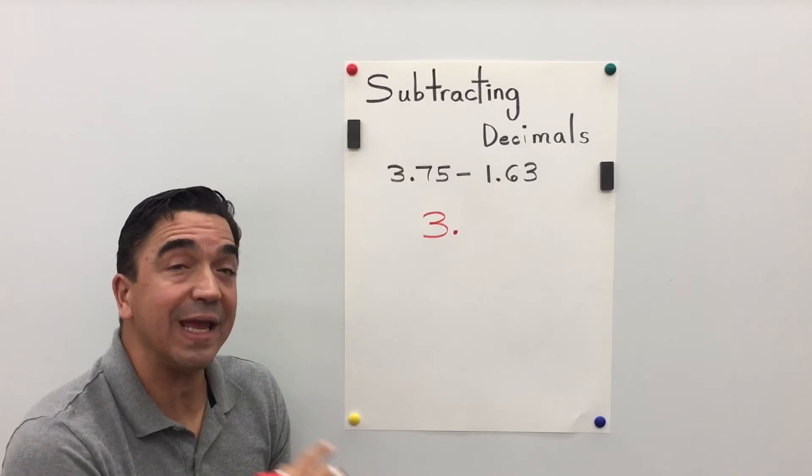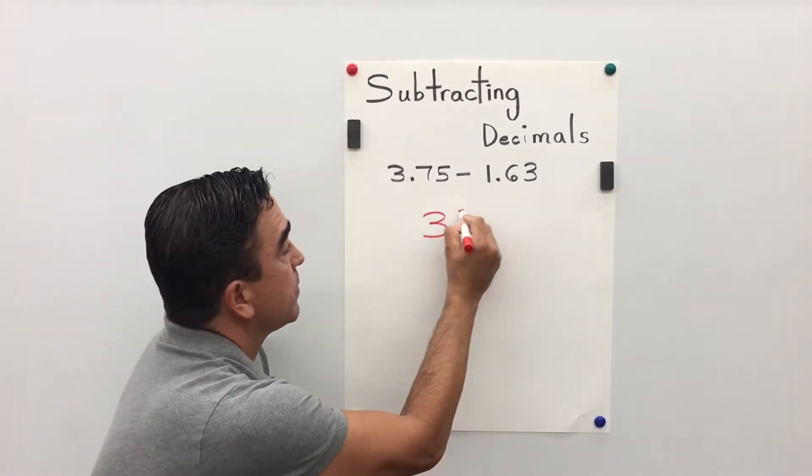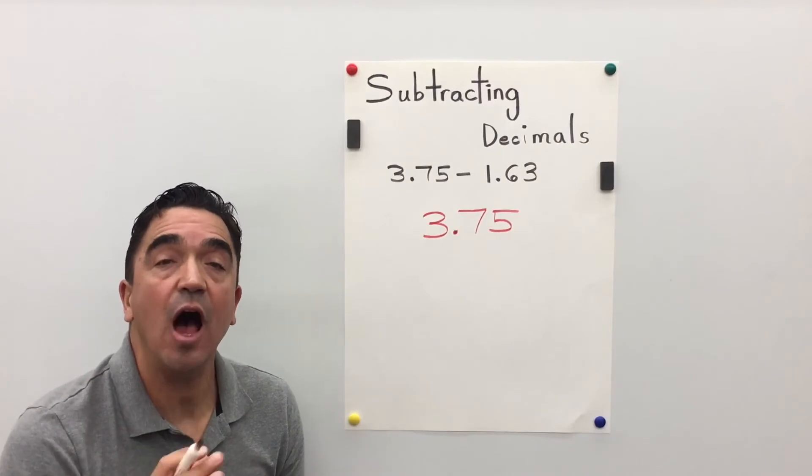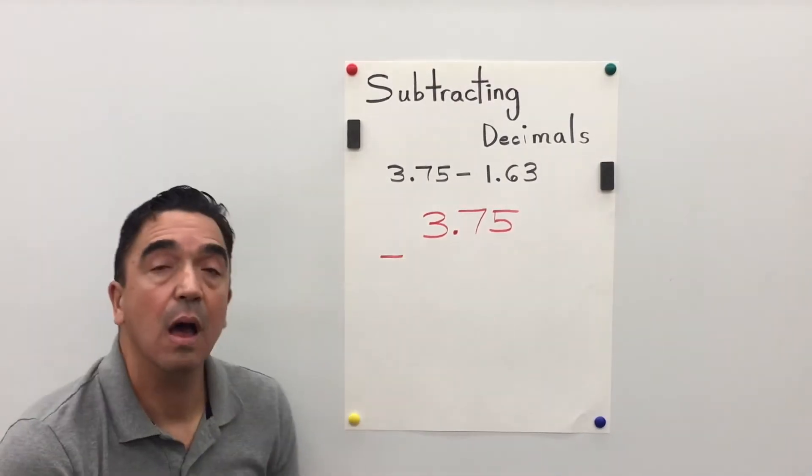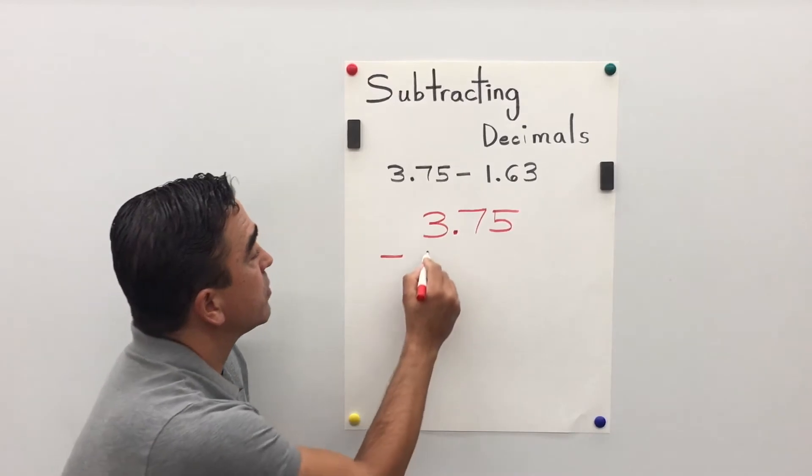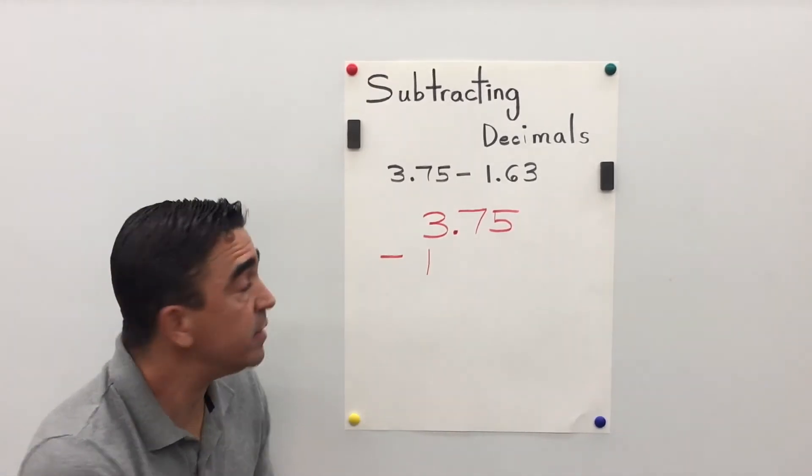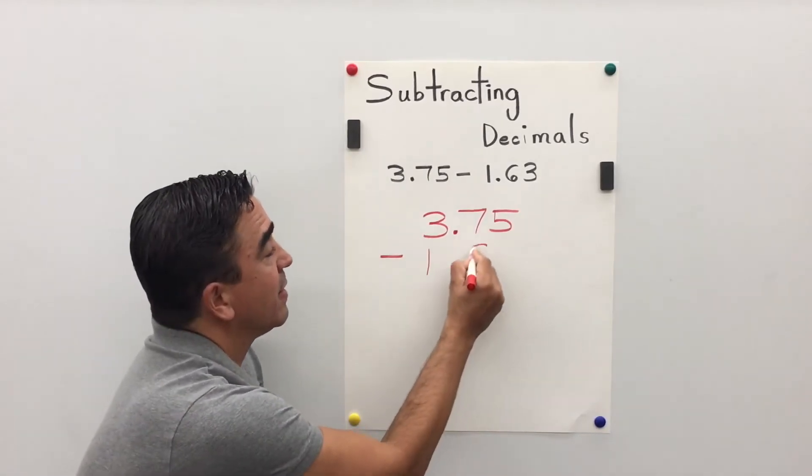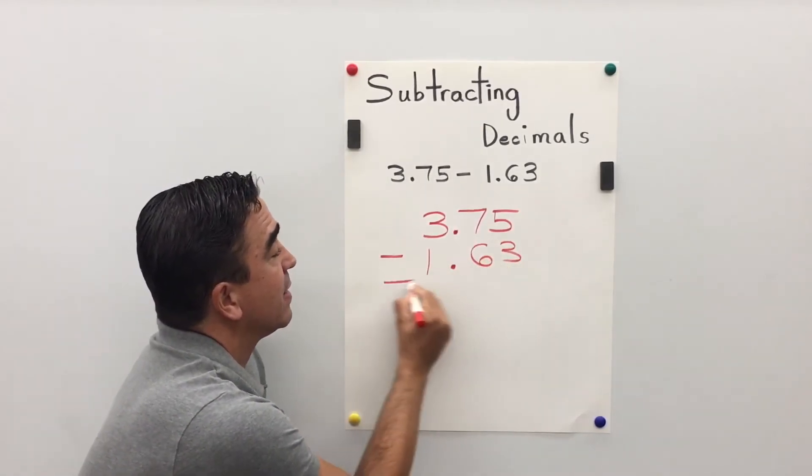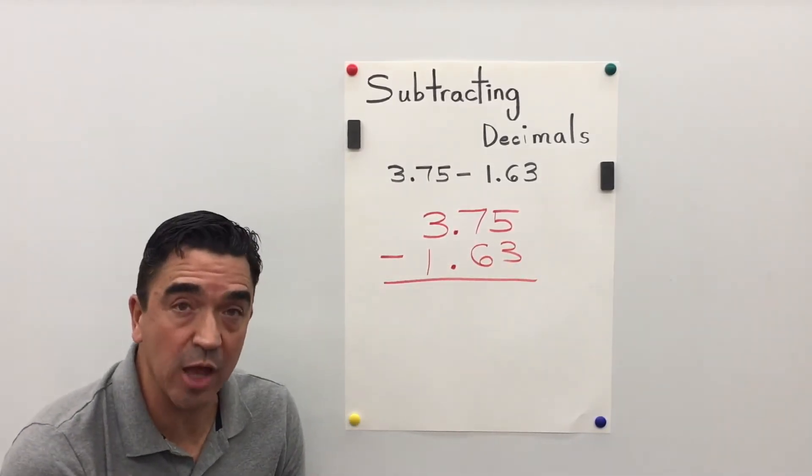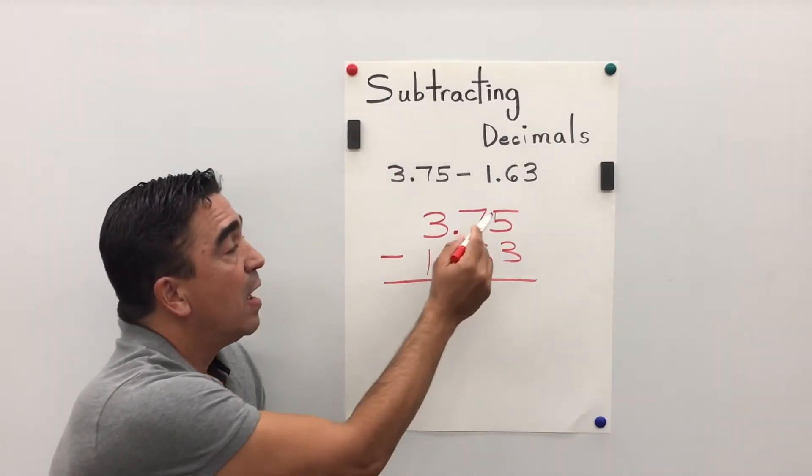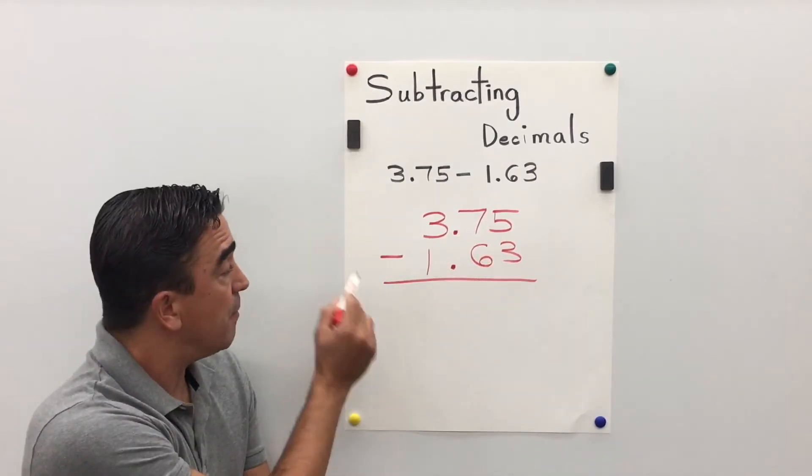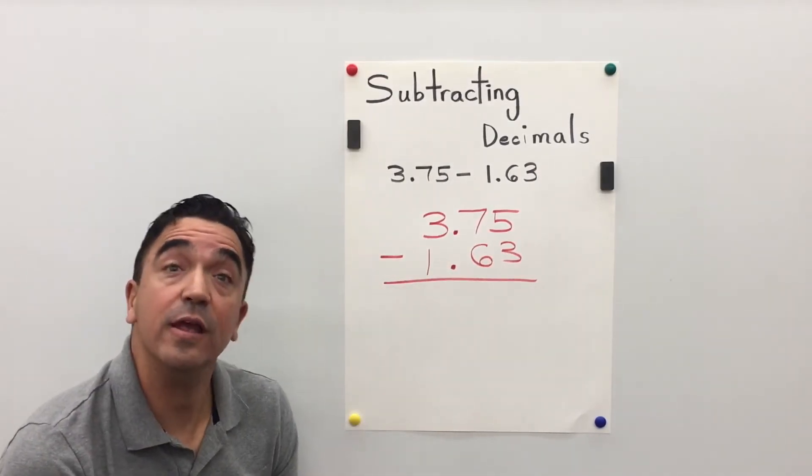3 and 75 hundredths minus 1 and 63 hundredths. Let's start in the hundredths place. 5 minus 3 is 2.